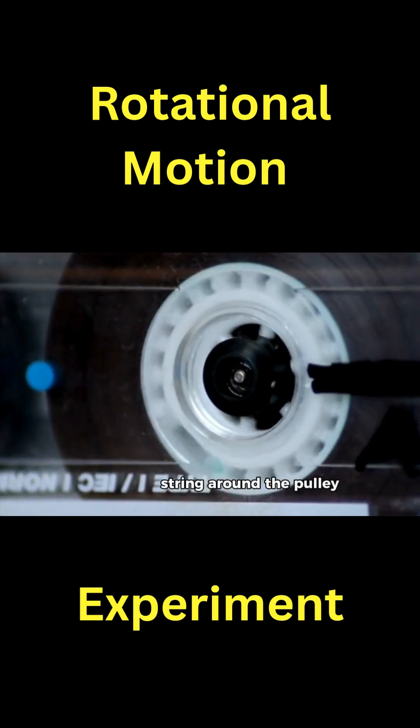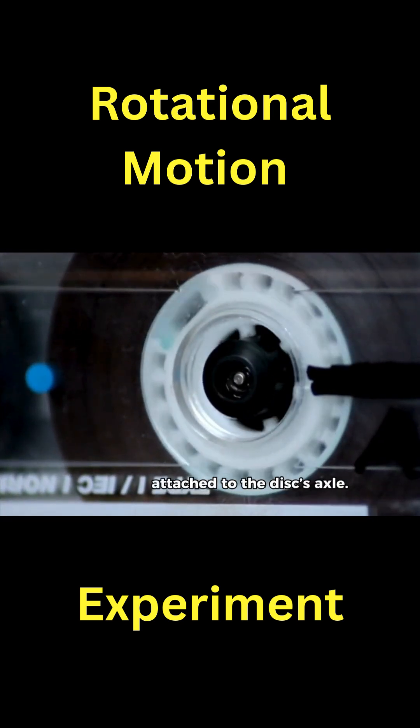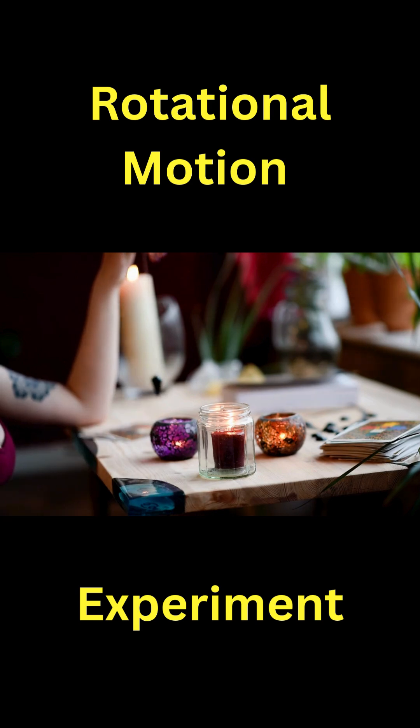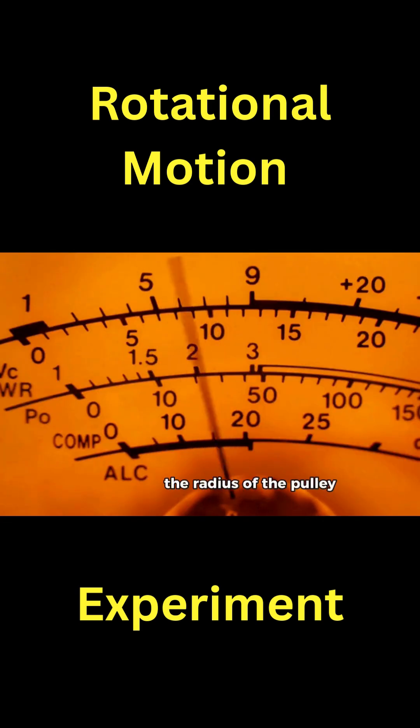Start by wrapping the string around the pulley attached to the disk's axle. Make sure to attach one end of the string to a small mass, allowing it to hang freely. It's crucial to measure the radius of the pulley and the mass accurately, as these details will be essential for your calculations later on.